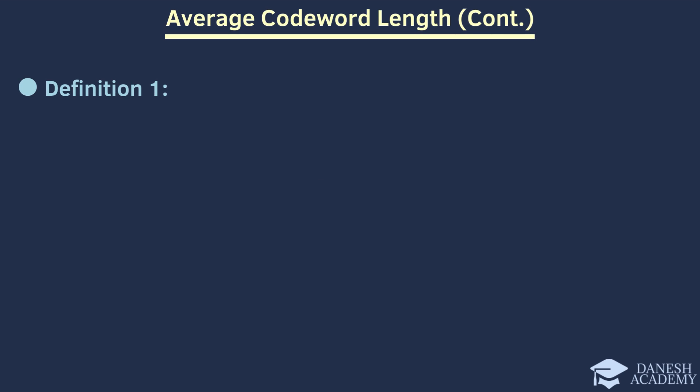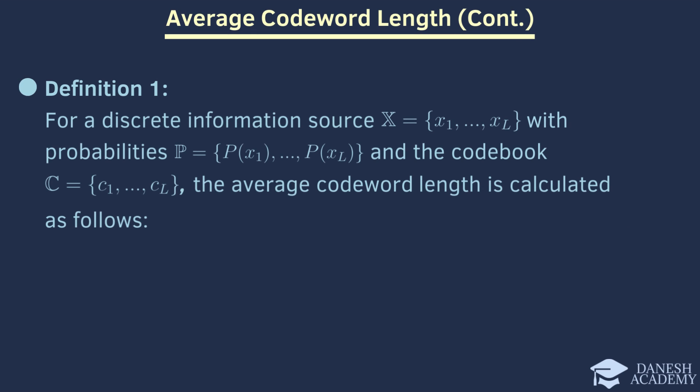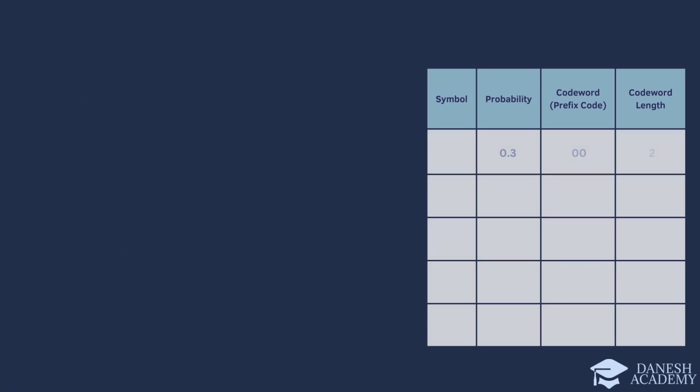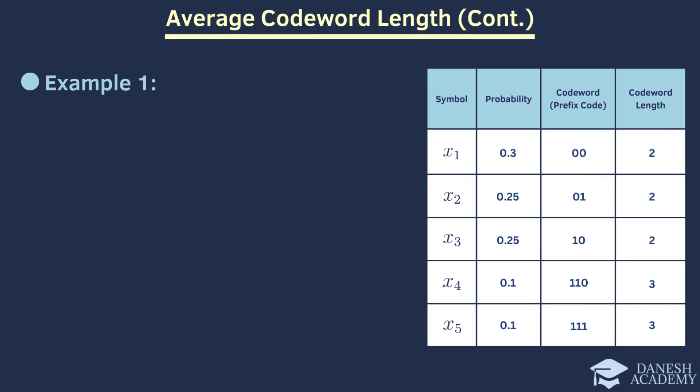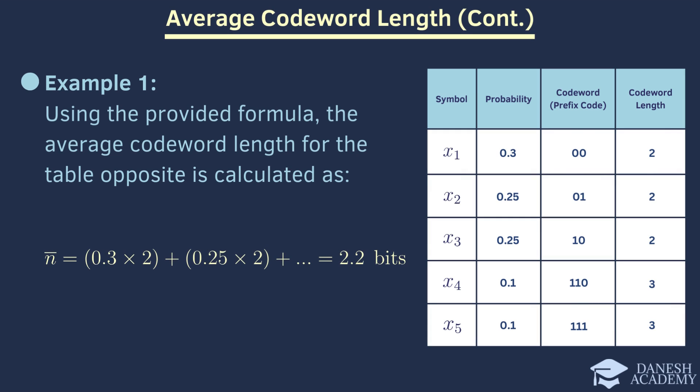We have a discrete information source consisting of symbols X1 through XL, each associated with probabilities PX1 through PXL, and a corresponding codebook containing C1 through CL. The average codeword length, denoted as N-bar, can be calculated using the following summation where X represents the symbol and N represents the codeword length. In this example, we have a table containing symbols aligned with their respective probabilities, codewords, and codeword lengths. The average codeword length of this table is calculated using a formula that incorporates the probabilities of each symbol and their corresponding codeword length.